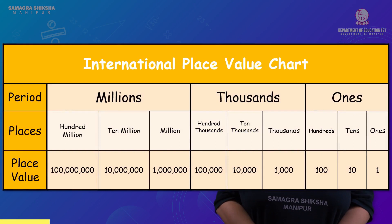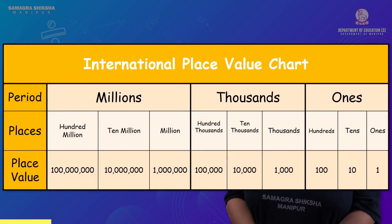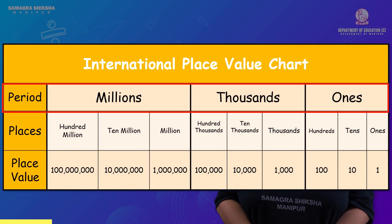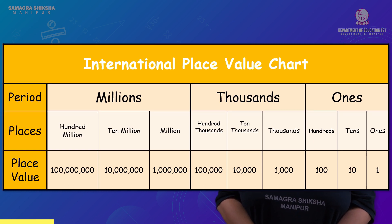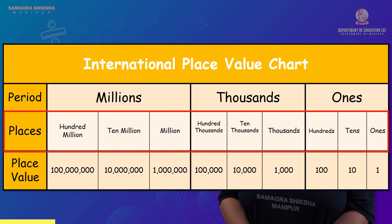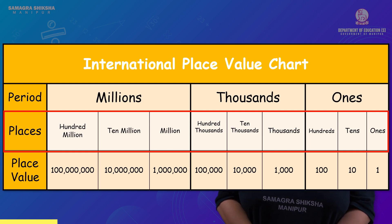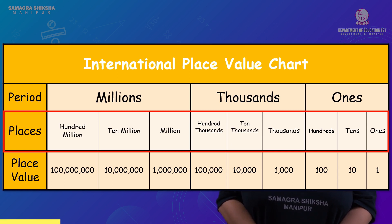Next, the international place value chart. In the international place value chart, the last period is the millions, thousands, and ones. The ones period has: ones, tens, hundreds. The thousands period has: thousands, ten-thousands, hundred-thousands. The millions period has: millions, ten-millions, hundred-millions.